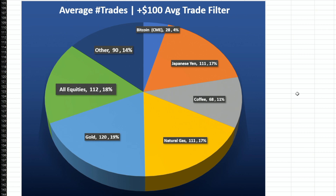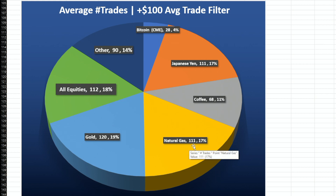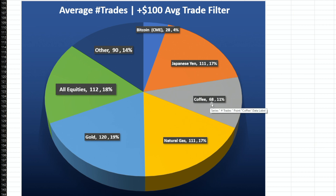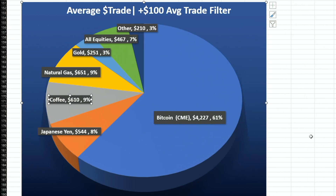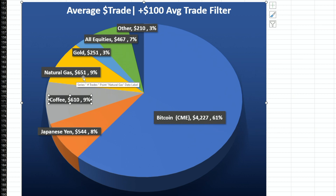Looking at average number of trades per strategy for the successful instruments: gold leads with 120 trades on average per strategy, followed by all equities and natural gas at 111 trades, Japanese yen at 111 trades, and coffee at 68 trades. For average trade in dollars, bitcoin occupies 61% of the pie with an average trade of $4,227 across its six successful strategies. The closest is natural gas at $651 per trade on average, followed by Japanese yen, coffee, and gold.